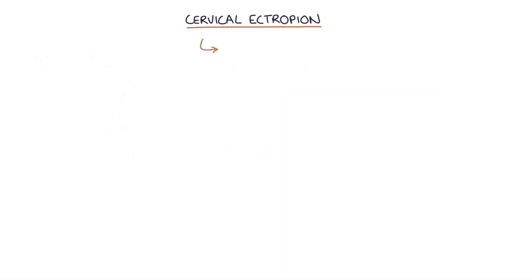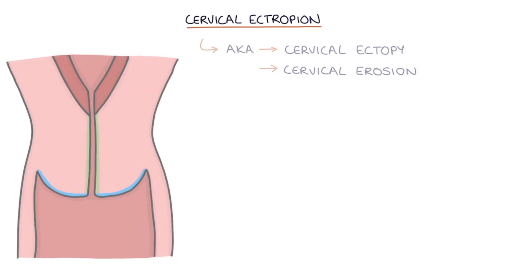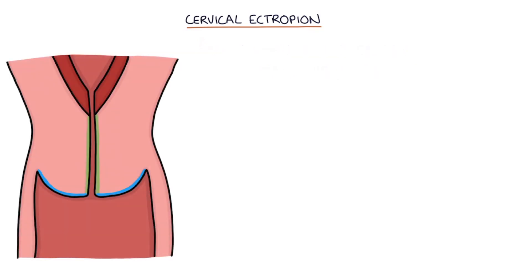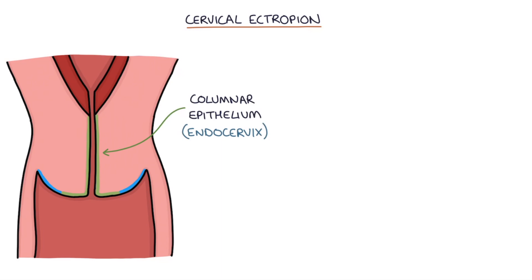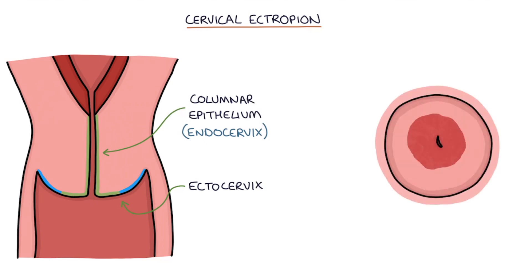Cervical ectropion can also be called cervical ectopy and cervical erosion. Cervical ectropion occurs when the columnar epithelium of the endocervix, which is the canal of the cervix, has extended out to the ectocervix, which is the outer area of the cervix that you can see on a speculum examination. This means the lining of the endocervix becomes visible on examination of the cervix using a speculum.